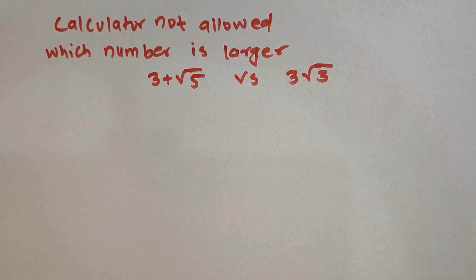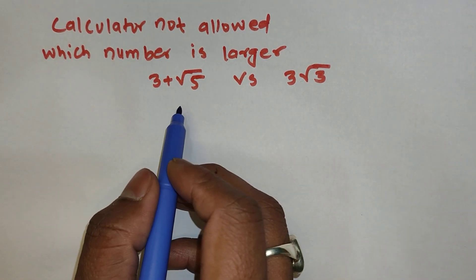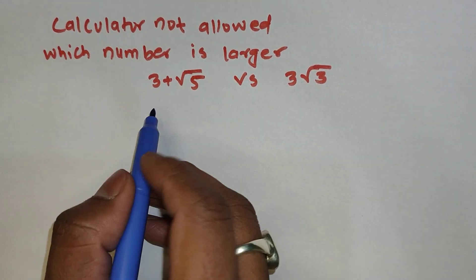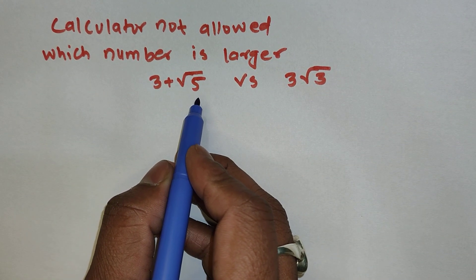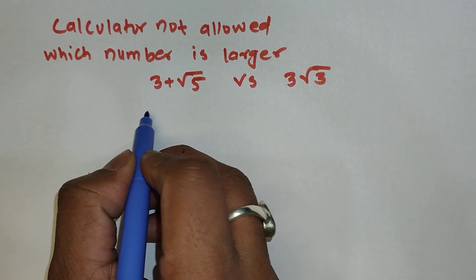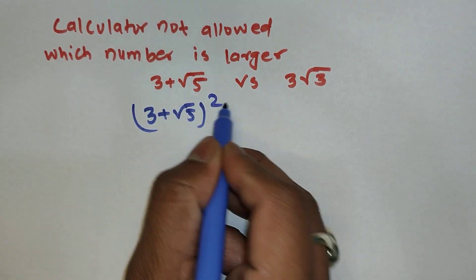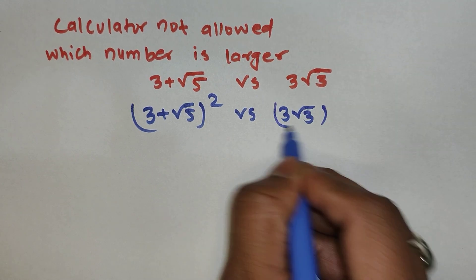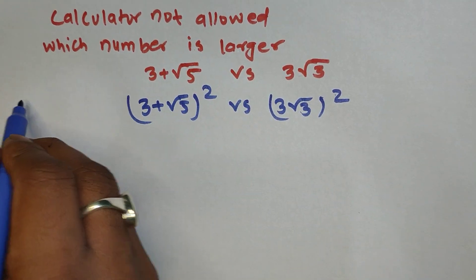Let's get into the question and find which number is greater. To do this, we need to remove the square roots from both sides. To remove the square roots, we take a square on both sides: (3 + √5)² versus (3√3)². The left side is in the form of (a + b)², so we will apply that formula.